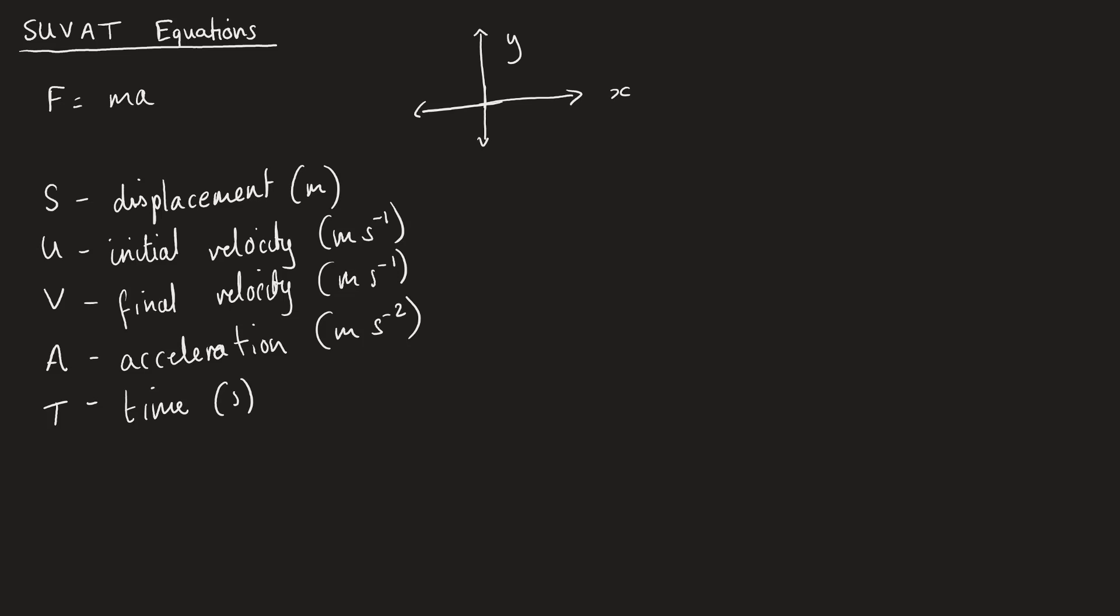So let me write them here. So first and most simply, we have V is equal to U plus AT. We could also say V squared is equal to U squared plus 2AS. We can also say S is equal to U plus V over 2, multiplied by T. We can also say S is UT plus a half AT squared. These are the four that you have to know. All four of these are on your equation sheet.